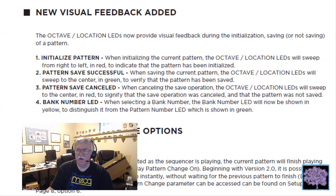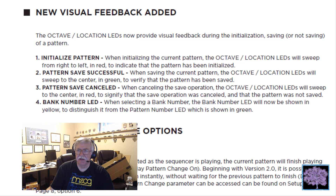In addition to the new visual feedback shown in the last segment, where the octave location lights sweep right to left in red to show the pattern was initialized, there are three other new features. Now saving a pattern successfully will cause the octave location lights to sweep to the center in green to show that the pattern was saved. If you cancel the save operation, those same lights will sweep to the center in red. And when selecting a bank number, the bank number LED will now be shown in yellow, so it won't be confused with the pattern number LED, which will be shown in green. This is all covered on page 8 of the manual addendum that comes with the firmware update, so be sure to take a good look at that.